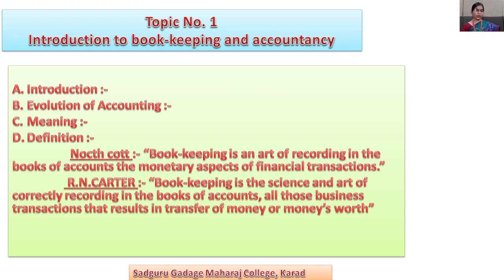If sales are increasing, the organization takes decision of extra production. If sales are decreasing, the company increases the expenditure on advertisement. Information about the business is required by the proprietor, government, customers, investors, employees, etc.